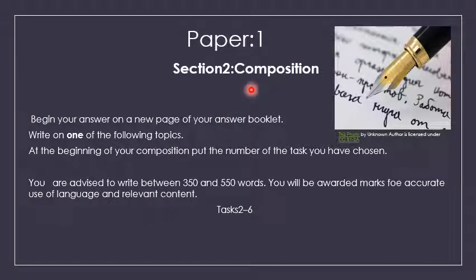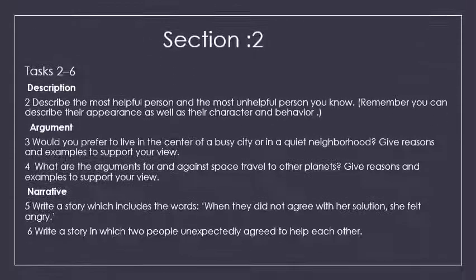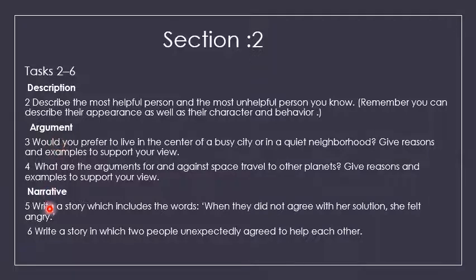In composition, you have been given a choice out of 5 topics to write on one topic, but here the word limit is quite big — it's from 350 to 550 words. This is how this part of the paper is set. The first topic is descriptive writing, the next two topics are argumentative essays, and the last two topics are narrative writing.